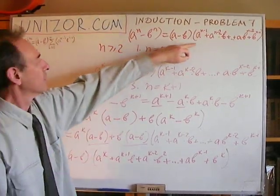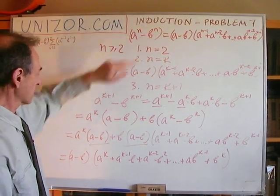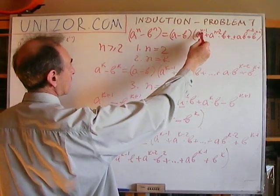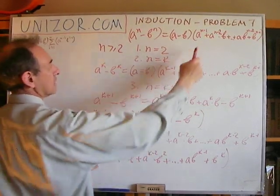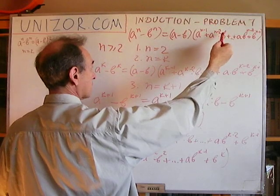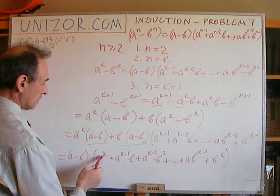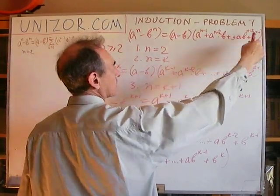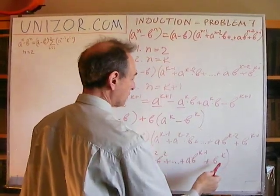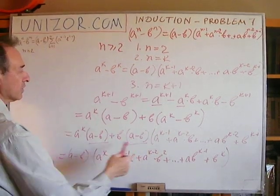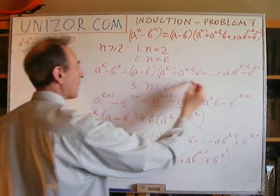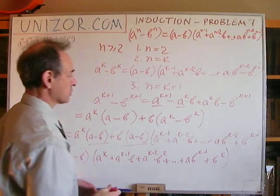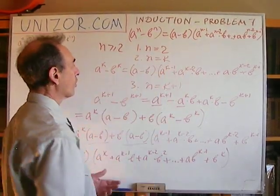Look at this: the formula with n equals k plus 1 should be a to the k plus 1 minus b to the k plus 1, which is what we started with, equals a minus b times a sum starting at a to the power of k, then a to the k minus 1 times b, and so on with decreasing a and increasing b, until the last term b to the power of n minus 1, where n equals k plus 1 means b to the power of k. That is exactly what we have. By this manipulation, assuming the formula is correct for n equals k and explicitly using it, I have arrived at the same formula for n equals k plus 1.